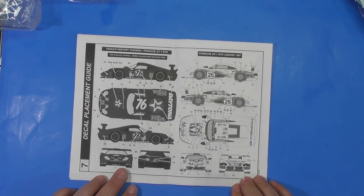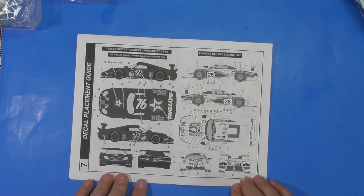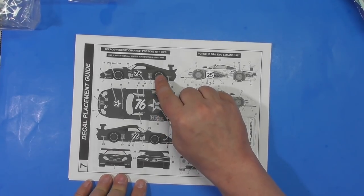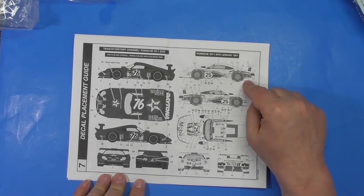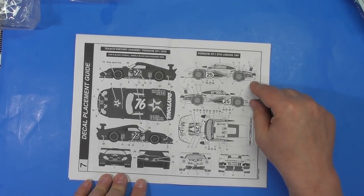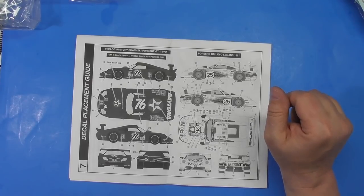And your two decal schemes. Texaco History Channel. Black car. Wheels blacked with polished rims. So you paint the inside black. And then the outside is aluminum. This one you already know. They're going to be the gold wheels. So two schemes.